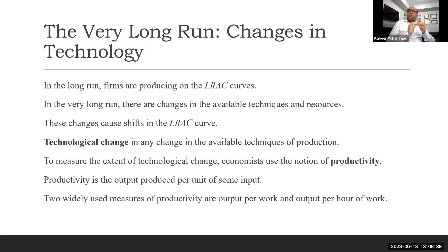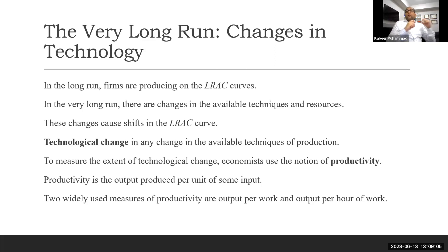For example, we produce wheat using the latest mechanisms and a lot of machines, so output is very high. But somewhere in the world, people still use animal or human power to produce wheat, and their output is less. We can compare output per acre or output per person. You see very low figures where they use a lot of labor, and their output per acre is low compared to countries using modern technology. This is how productivity is measured.